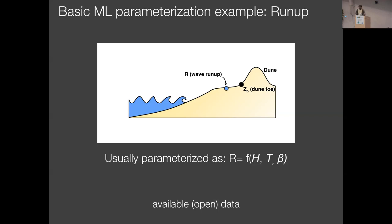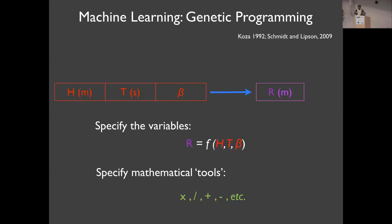The typical approach to building run-up parameterizations is to take these three parameters, non-dimensionalize them, and regress them against each other creatively. You're essentially picking the functional form of the line fit through the data cloud through linear or non-linear regression. This has been very successful and is used in operational forecasting models.